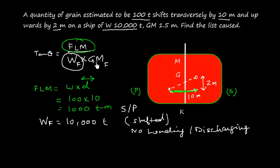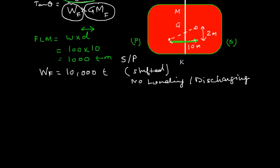Now, the third part, the GM final. GM is already given, which is 1.5 meter. However, there is a shift in upward direction, and this will affect the GM. We need to calculate the final GM. We can find the final GM by considering this effect of vertical shift.